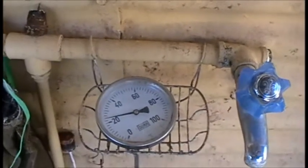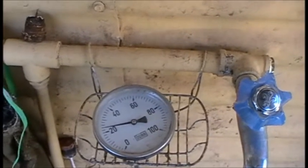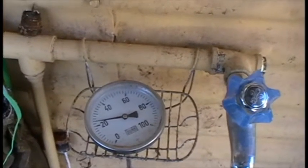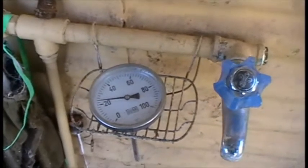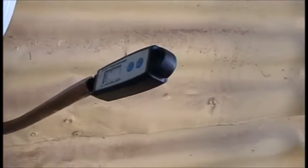Righto, well as promised we'll check the temperature. Ambient's just under 24. It's getting on in the afternoon. We've had about five hours of sunlight on the batch heater since we last checked the temperature. So we'll have a little look here.